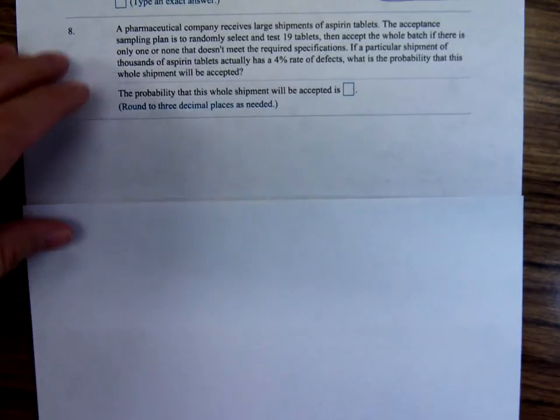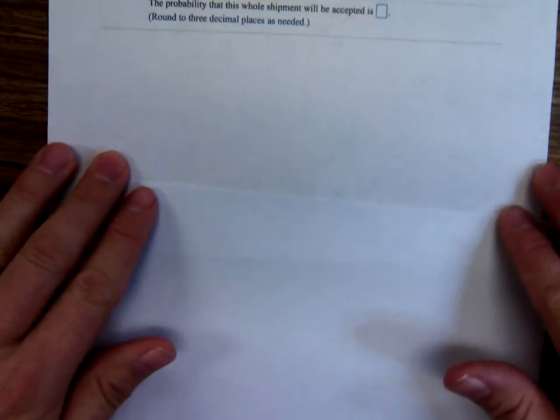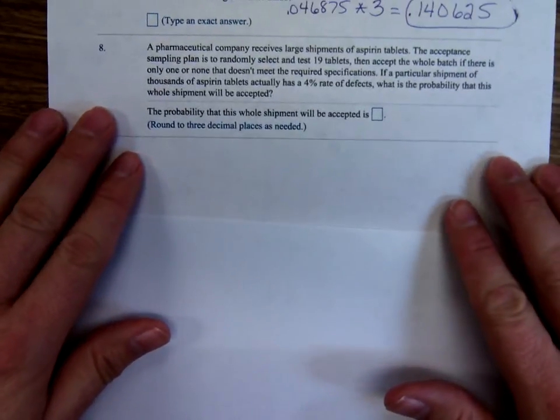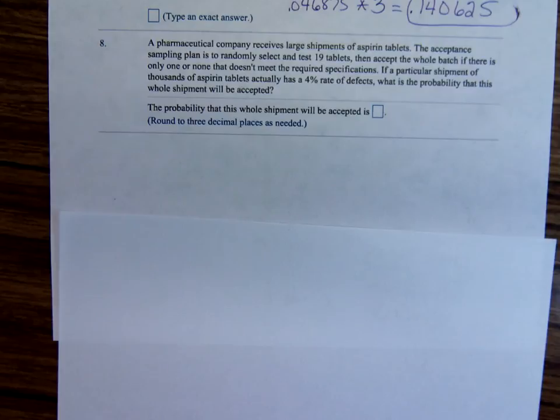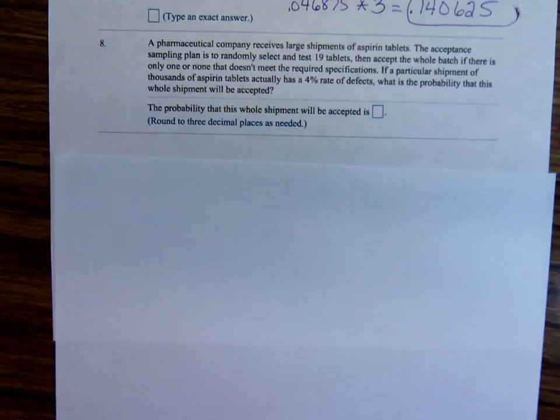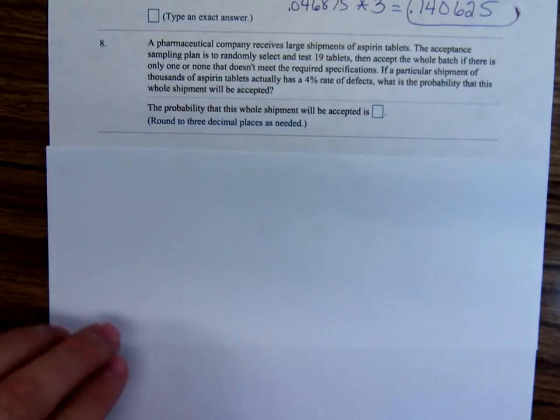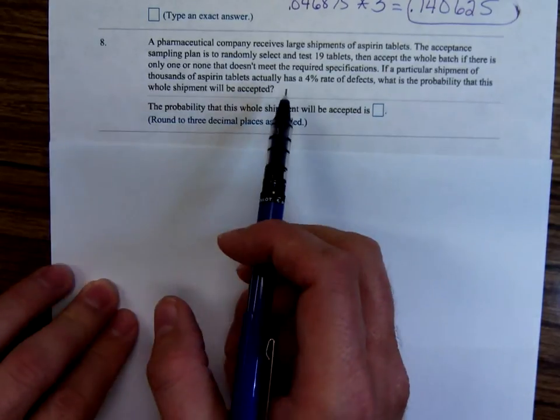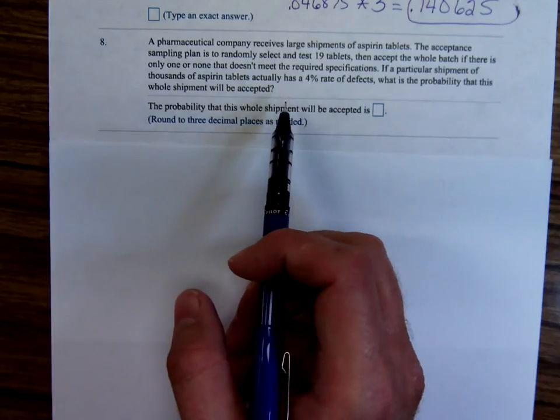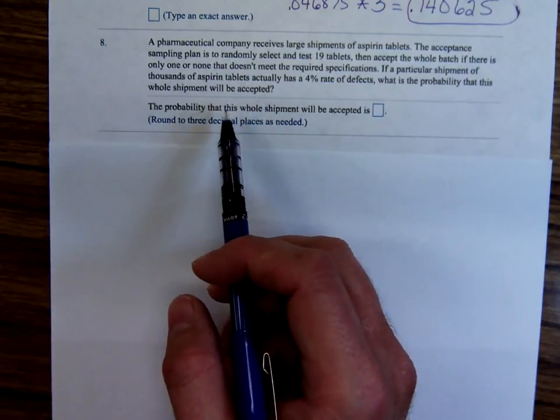Now, problem number eight. A pharmaceutical company receives a large shipment of aspirin tablets. The acceptance sampling plan is to randomly select and test 19 tablets. Then accept the batch if there's only one or none that don't meet the required specification. If a particular shipment of thousands of aspirin tablets actually has a 4% rate of defect, what's the probability the whole shipment will be accepted?